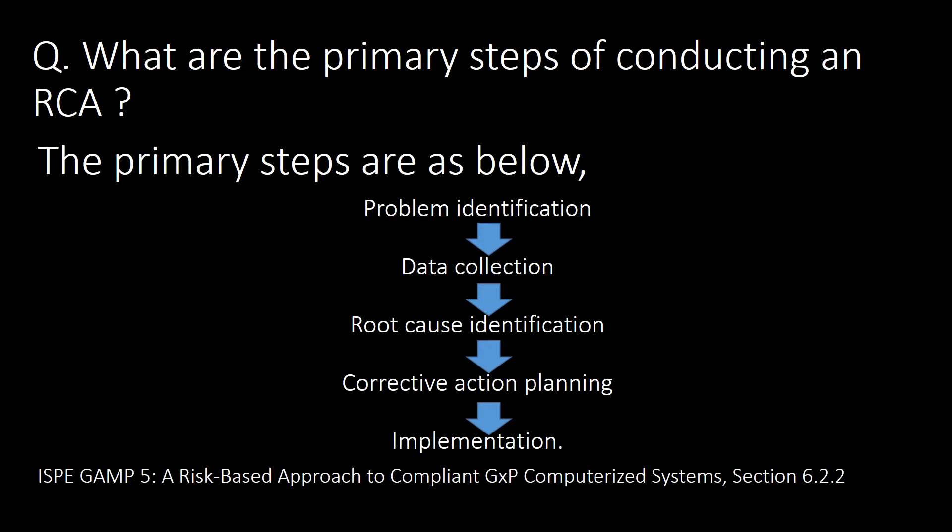A very frequently asked question: what are the primary steps for conducting root cause analysis? Here are the five major steps recommended by the GAMP 5 guideline. Step one: problem identification. Step two: data collection — gather data relevant to the problem statement. Step three: root cause analysis — identify the root cause using various tools and techniques. Step four: corrective action planning — identify corrective and preventive actions to avoid recurrence. Step five: implementation — implement the identified corrective and preventive actions.